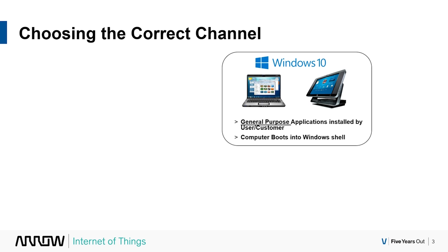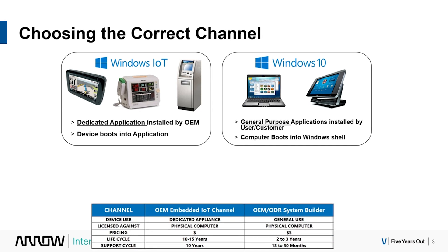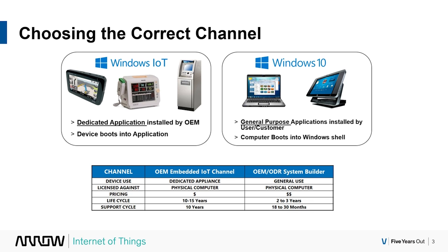If you're an OEM building a dedicated application or dedicated purpose device — marketing it, selling it as a dedicated function — you need to be using Windows IoT. That's the reason Microsoft has these two channels. Looking at the comparison chart: IoT is for dedicated appliances, the physical license is tied to the physical computer, you get the best pricing with three price tiers based on the processor, a long lifecycle, and a 10-year support cycle. In comparison, Windows 10 Pro falls under the SAC semi-annual service channel — general use, tied to the computer, average pricing, short lifecycle, and only an 18 to 30-month support window.